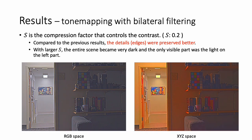Parameter S is the compression factor that controls the contrast, and I used S with 0.2. Compared to the previous results, the details edges were preserved better. With larger S, the entire scene became very dark and the only visible part was the light on the left part. So I think 0.2 is the best choice of S.